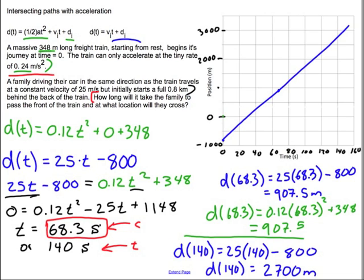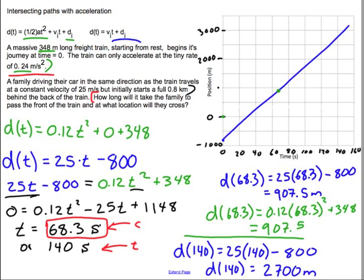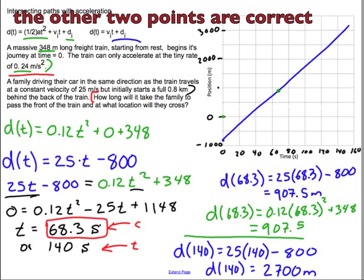The train starts here. Also goes through this location here. And then, of course, both vehicles at 140 seconds should cross through at about here. So that blue one should be going through that as well. That's the 2,700 mark.